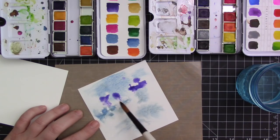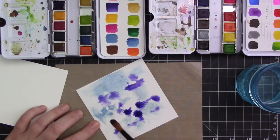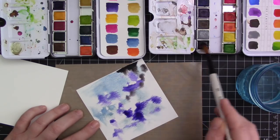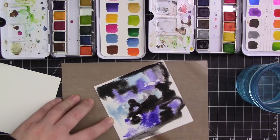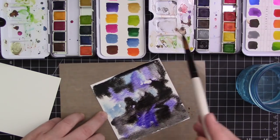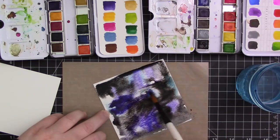So I'm using Prima Confections watercolors and I have a number 10 round brush, and I completely covered the whole piece of watercolor paper with water first just to get it nice and wet. And now I'm taking different colors from these palettes here and I'm adding different colors to the cardstock piece.